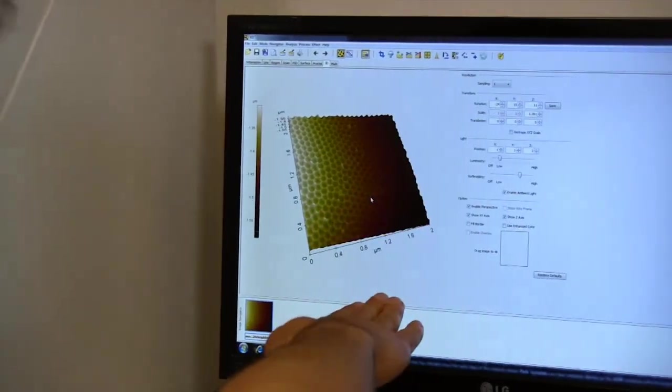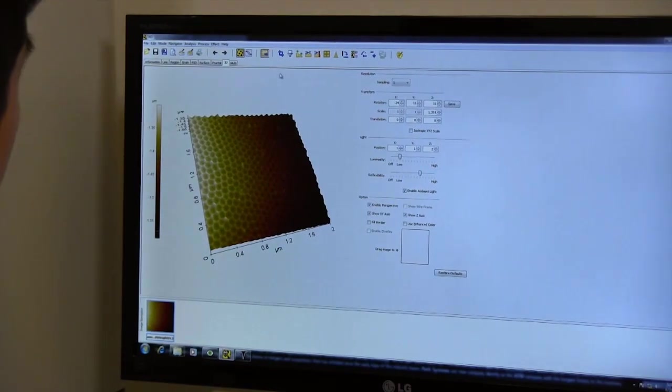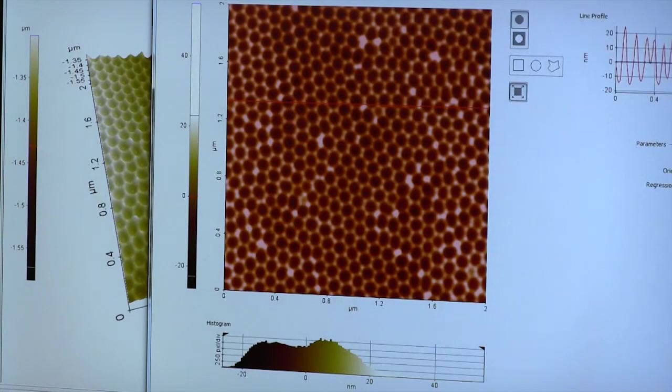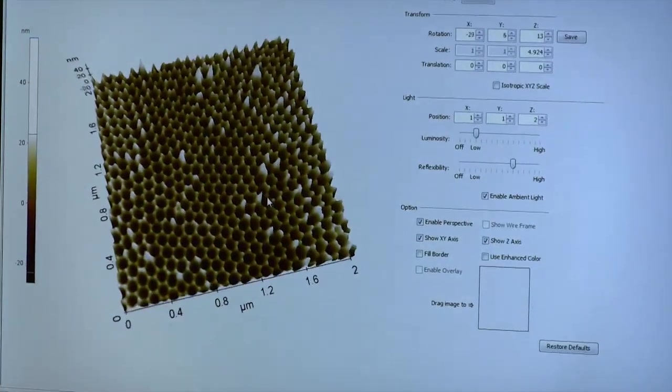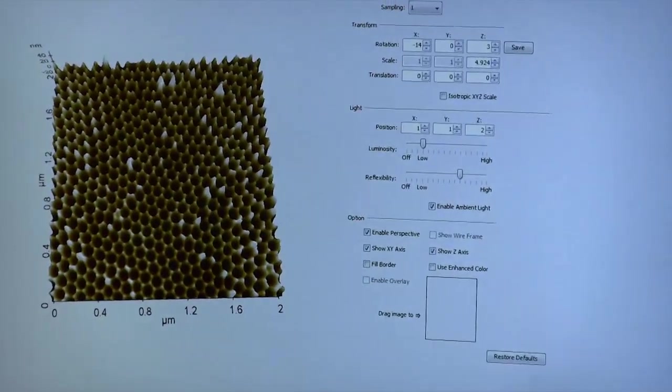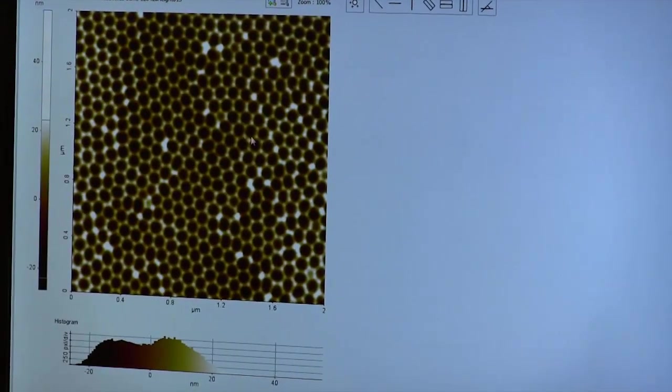let me rotate the data to untilt it. Then we can look at things a researcher studying this material might want to observe. One thing we might be interested in is the diameter of these pores on the surface.